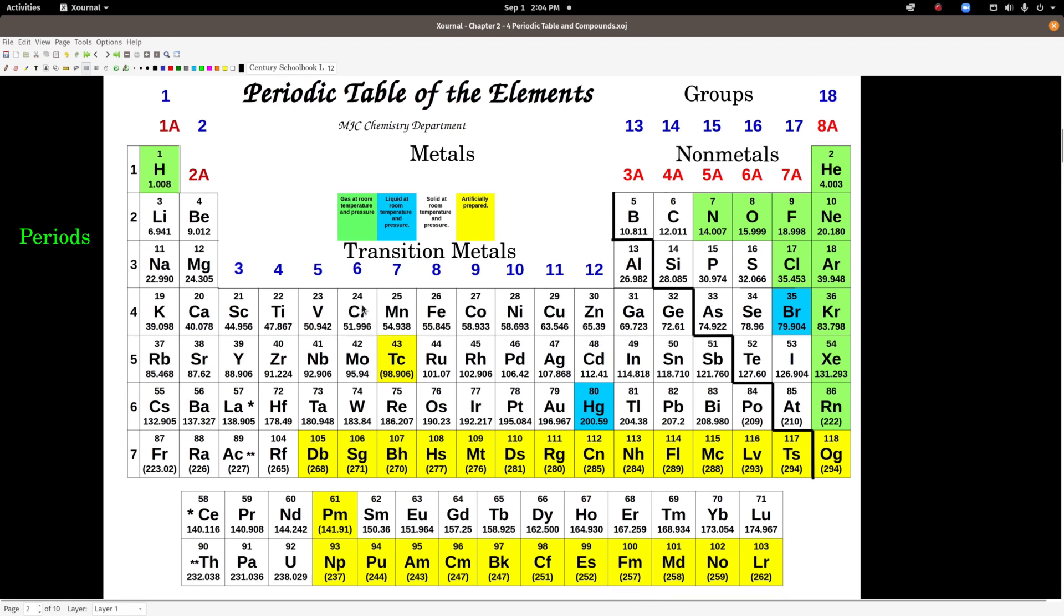In this periodic table, as in most, there is also listed the atomic number. Remember, that's the number of protons. That's the number above the symbol. The number beneath the symbol is the average atomic mass. So titanium's average atomic mass is 47.867 AMUs.